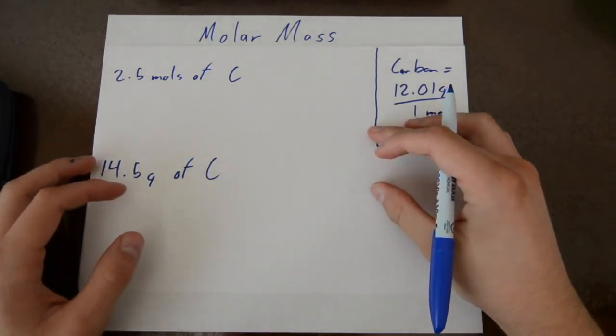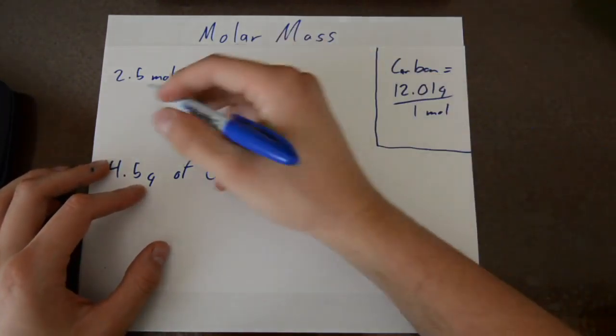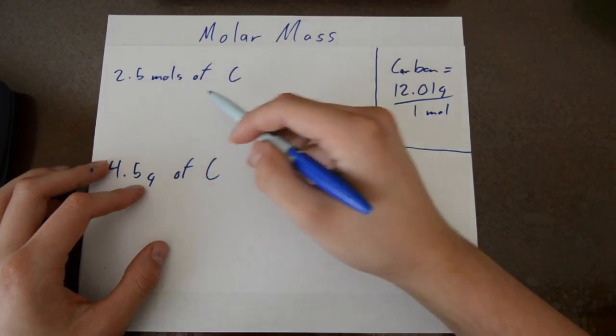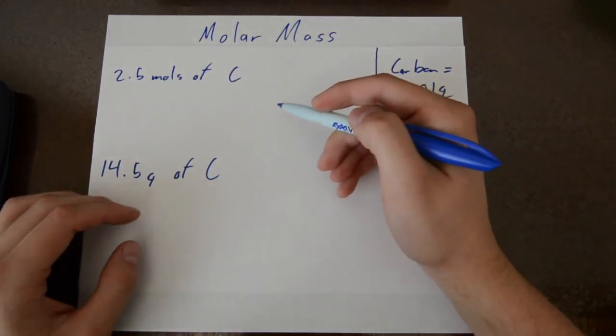Alright, so you have some molar mass calculations here. You have 2.5 moles of carbon and you want to know how many grams of carbon you have.